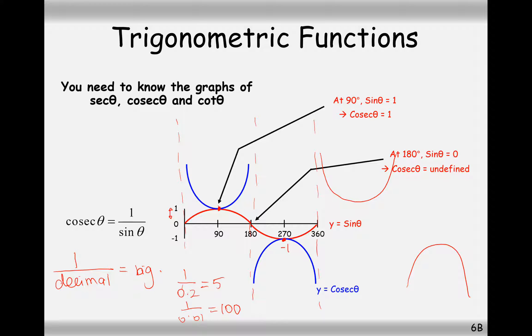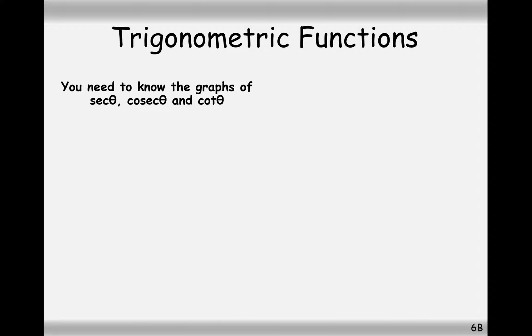So key points here are that it's undefined every 180 degrees. We have intersection points at 90, 270 and plus every 180 degrees on from there as well. So we get a lot of asymptotes as well.